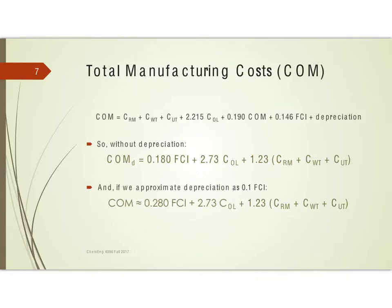Combining all categories gives the total cost of manufacturing, COM. A lot of times we'll determine the cost of manufacturing without depreciation, using COM subscript D, where D means without depreciation. In that case, COM appears on both sides of the equation; combining those terms and dividing by the common factor gives the final expression. We could also approximate depreciation as 10% of FCI, giving a final approximate expression for COM.